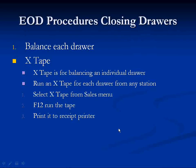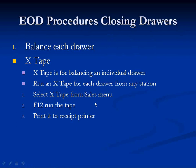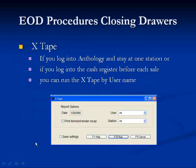To balance a drawer, we're going to use the X-Tape. The X-Tape is designed to balance an individual drawer. You want to run it for each drawer, and you can do that from any station. To run the X-Tape, go to the Sales menu and select X-Tape. Click on F12 to run the tape and then print it to the receipt printer.